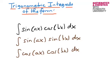In this video, I want to talk about how to calculate a certain class of trigonometric integrals. These are integrals of the following form: they either involve a sine multiplied by a cosine, a sine multiplied by a sine, or a cosine multiplied by a cosine. The arguments of these trigonometric functions are always linear in x, where x is the variable we're integrating over, and the constants in front of x — such as a and b — are generally different.